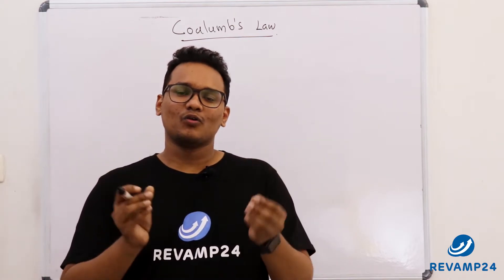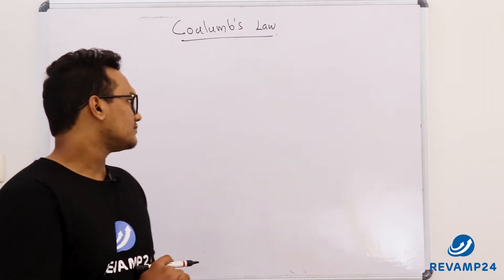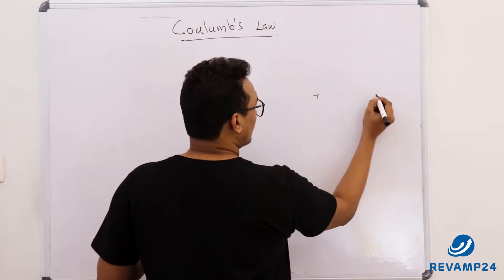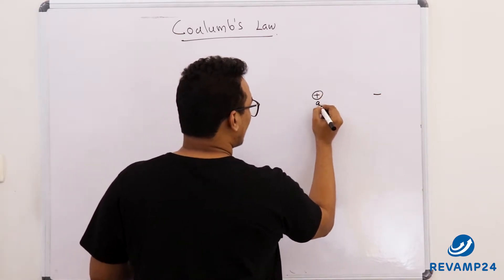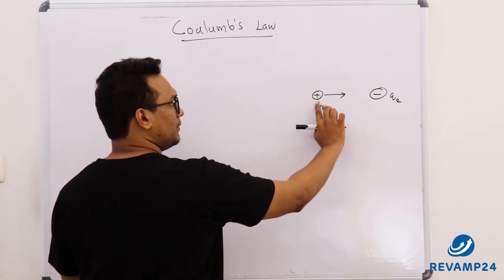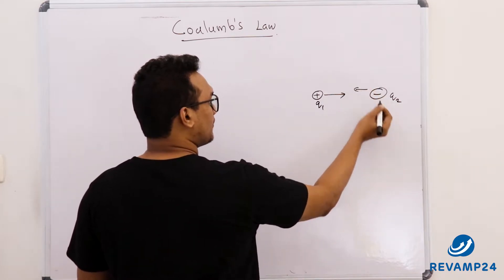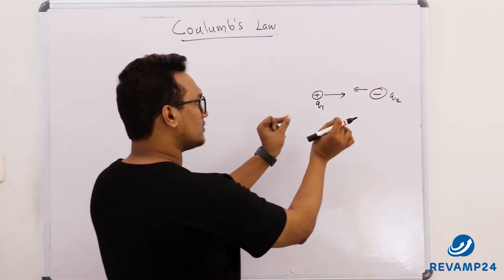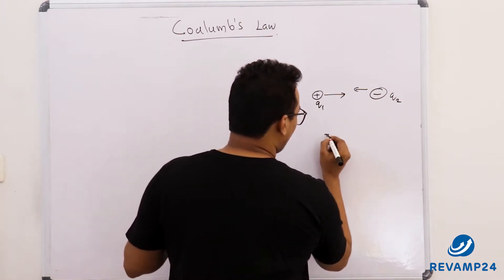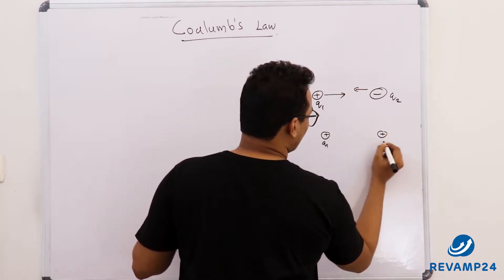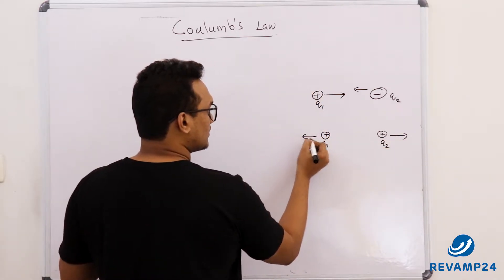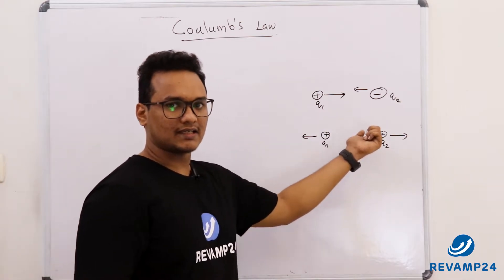In this video I will explain Coulomb's law. In the previous lectures we have seen that when we have a positive charge q1 and a negative charge q2, there will be an attraction — positive is attracted by negative and negative by positive. When we have two positive charges q1 and q2, q1 will be repelling q2 and q2 will be repelling q1, so the nature is repulsion.